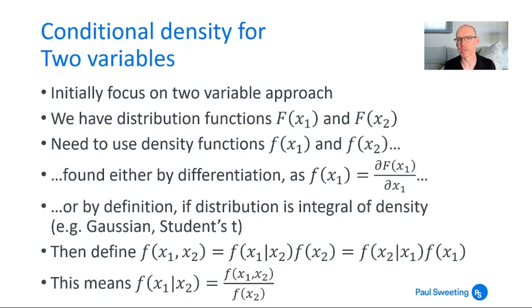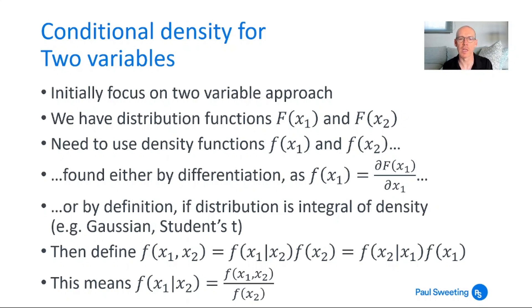The starting point is distribution functions F(x1) and F(x2). If we're using a likelihood function we need to work with density functions, so we need to get to little f(x1) and little f(x2). You can find these by differentiation — little f(x1) is the partial derivative of the distribution function with respect to x1 — or simply by definition if the distribution function is itself just an integral of a density function, such as Gaussian or Student's t. We can then define f(x1, x2) as f(x1 | x2) · f(x2), or equivalently f(x2 | x1) · f(x1). Rearranging, this means f(x1 | x2) = f(x1, x2) / f(x2).